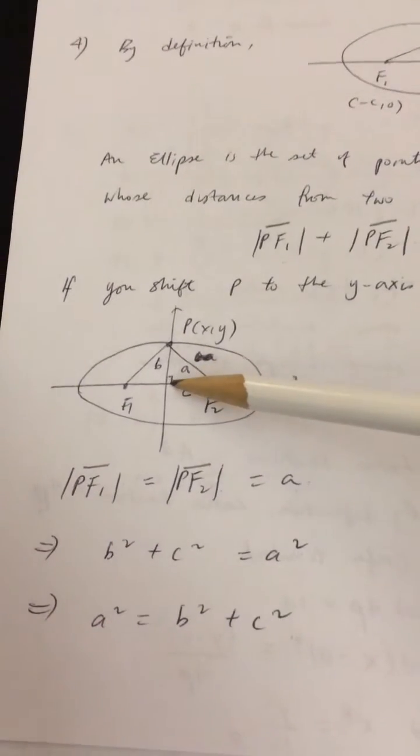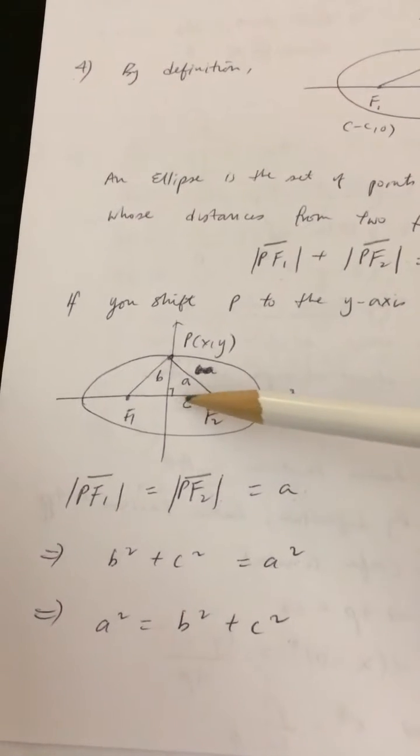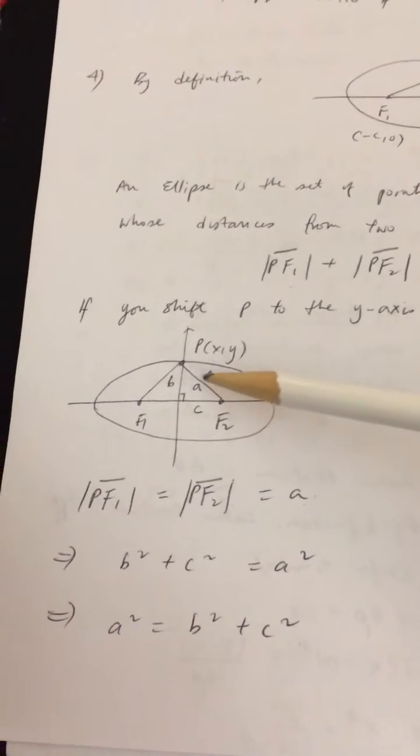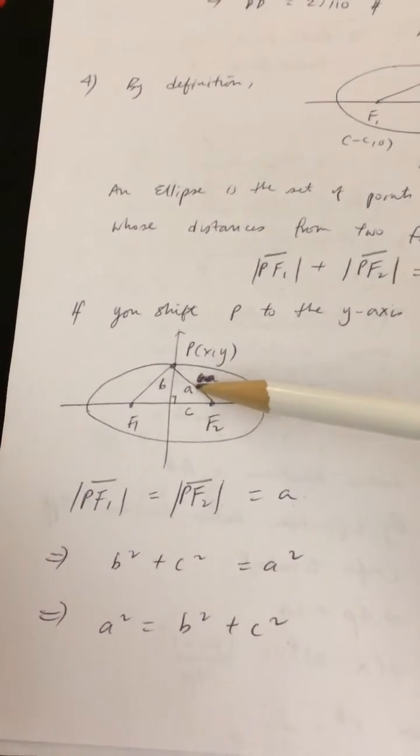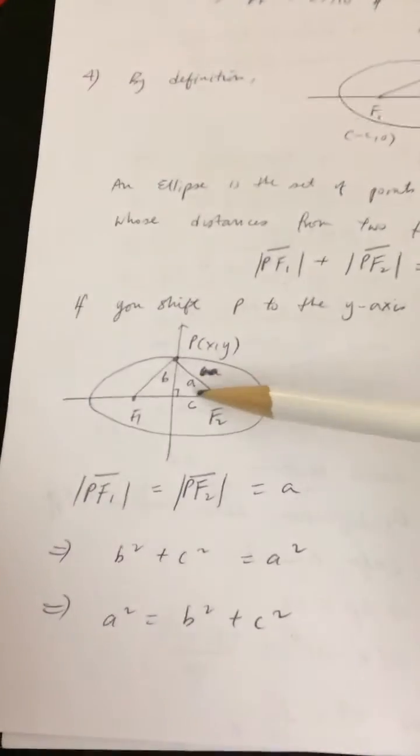The distance from the center to the co-vertex is B, and the distance from the center to the foci is C. This forms a right angle where A is the hypotenuse. Therefore, A² = B² + C².